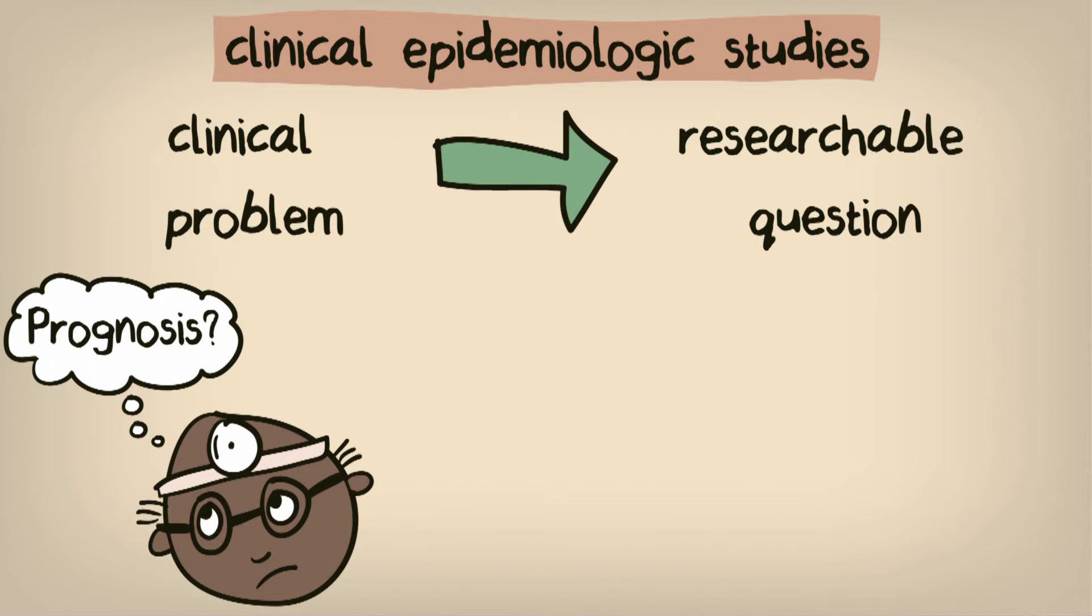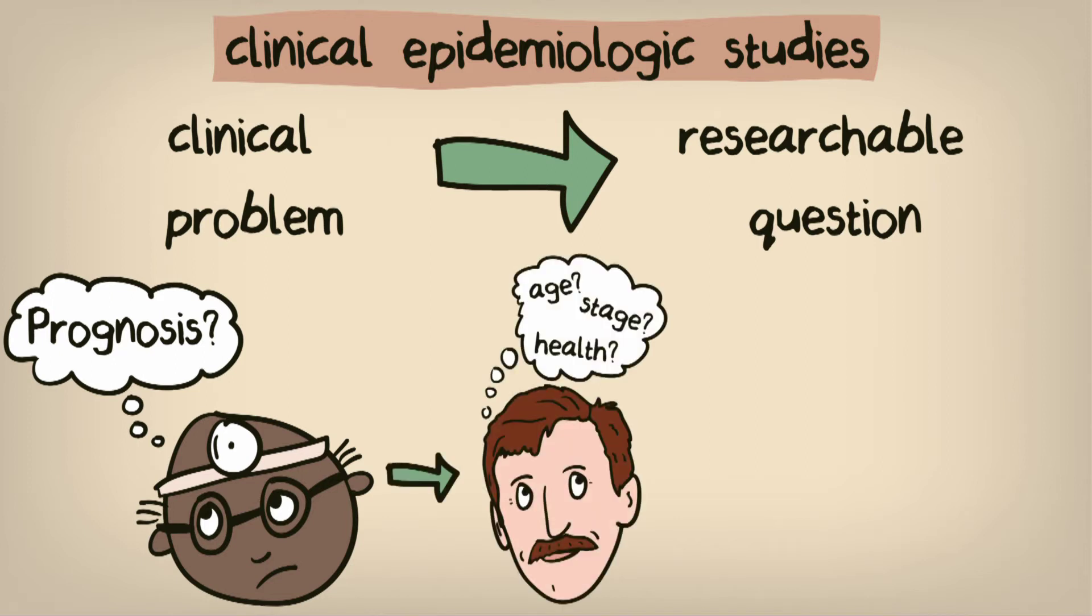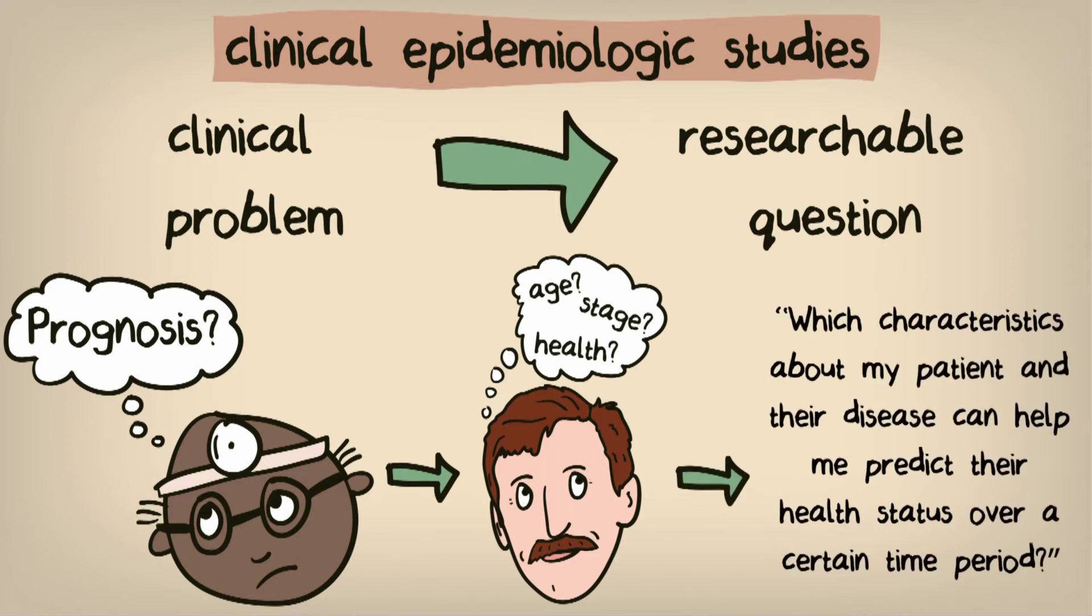As researchers, we would like to know what information we can use to come up with the most accurate predictions possible. A general research question could be, which characteristics about my patients and their disease can help me predict their health status over a certain time period?